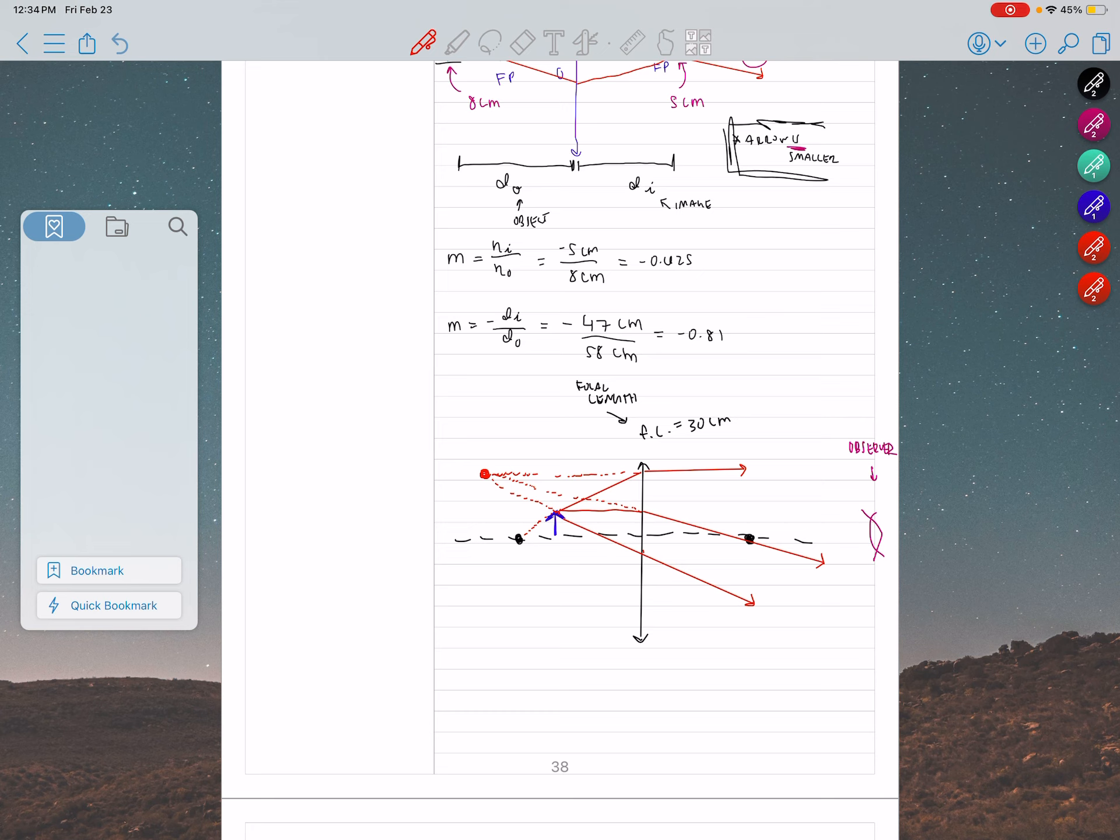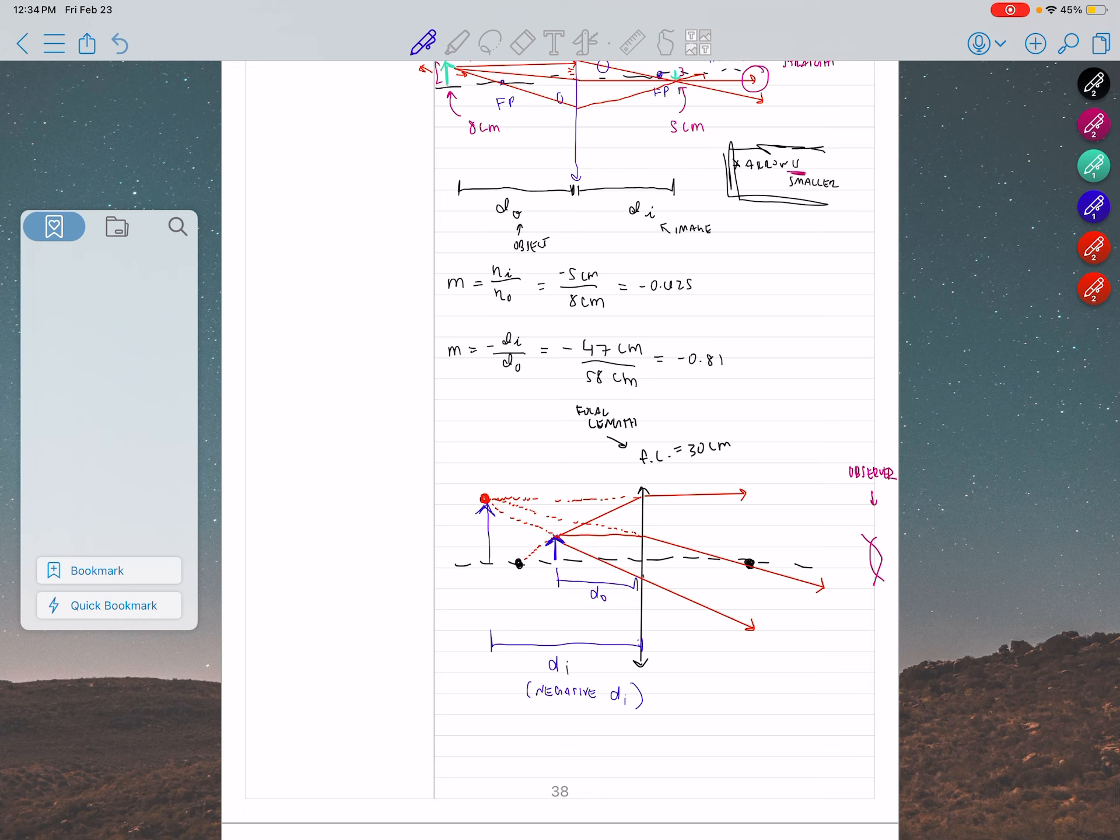And in this case, this is going to be my image. Again, this is the distance to the object, and this is going to be the distance to the image. Now, in this case, the image is formed on the object space. So my distance to the image, in this case, is going to be negative.